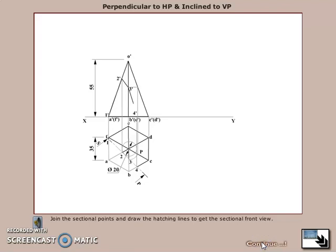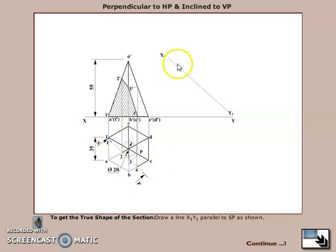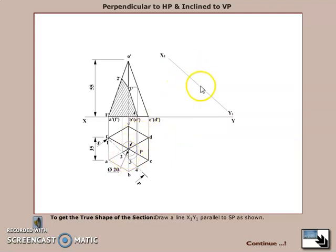Join all the points by straight lines and hatch the section. Since the section plane is inclined to one reference plane and perpendicular to the other, it is not parallel to any reference plane, so the sectional front view obtained is not the true shape. We must draw the true shape additionally. For that, draw an auxiliary reference line X1Y1 parallel to the section plane, either above or below — it is better to draw it in the bottom portion if there is enough space. Take any convenient distance from the section plane to this line.